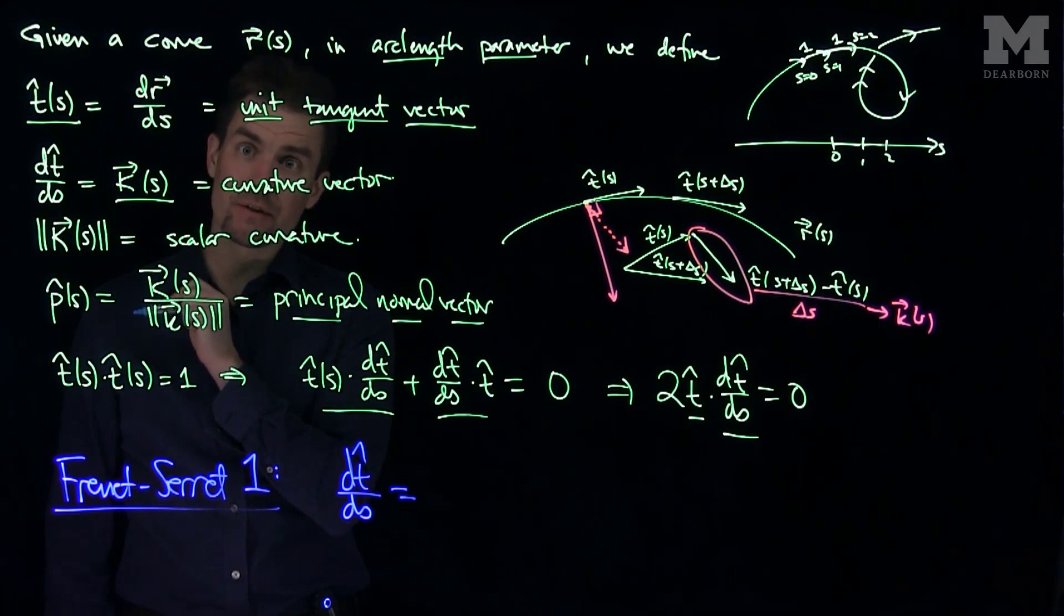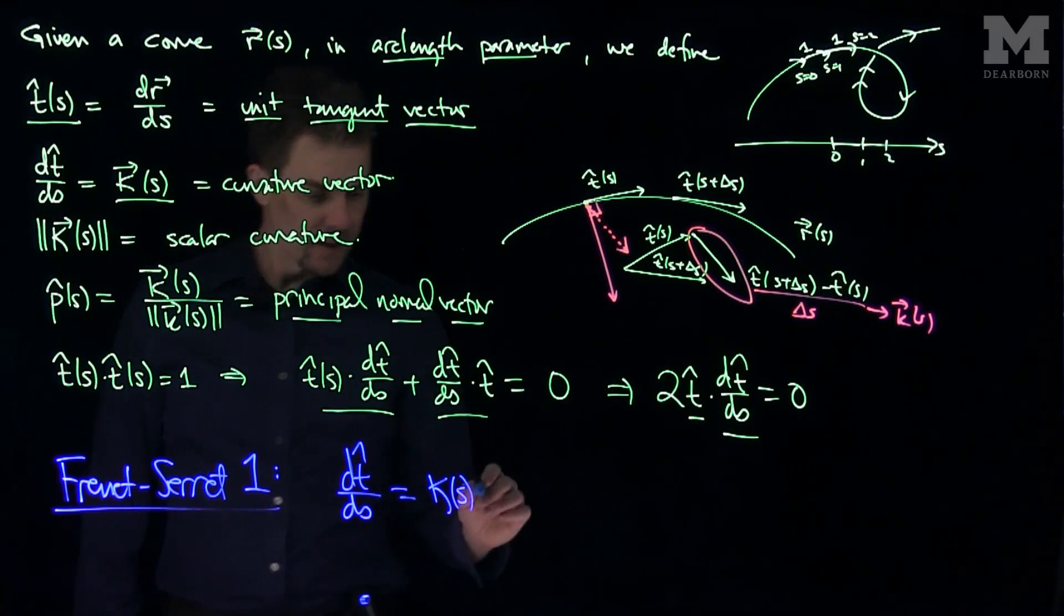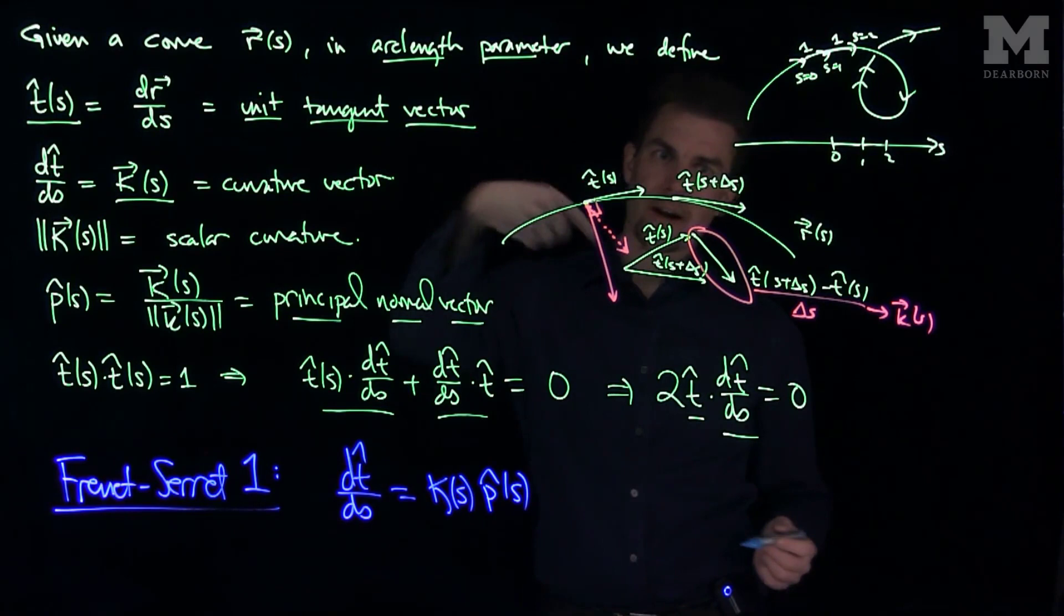Well, this is the curvature vector, and the curvature vector is the curvature times the principal normal vector. So this is going to be the curvature, and the curvature of course is a function of s times p hat of s. So all these are functions of s because as we can see from this, the curvature vector is changing.